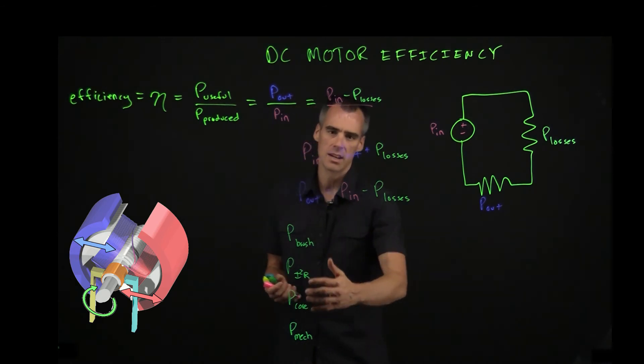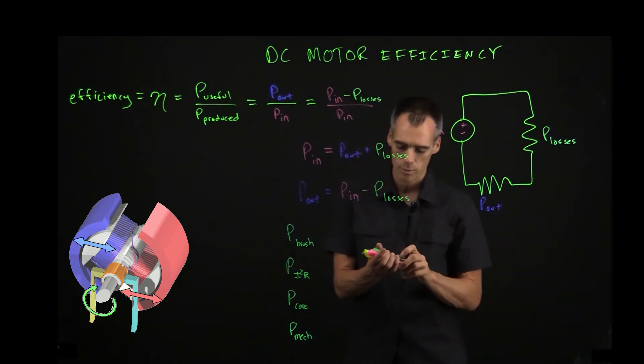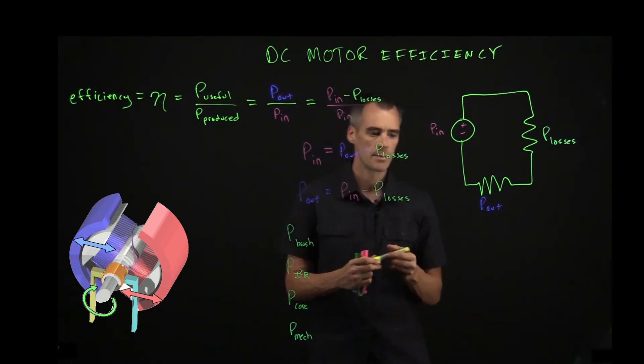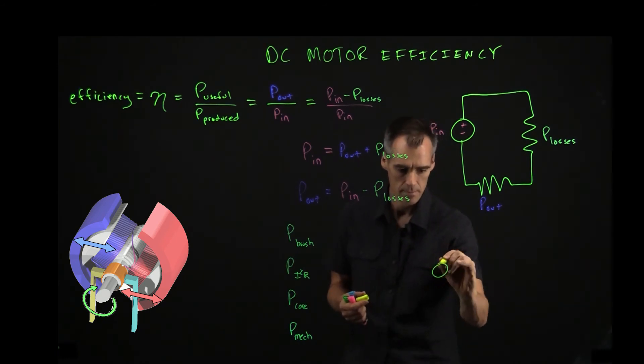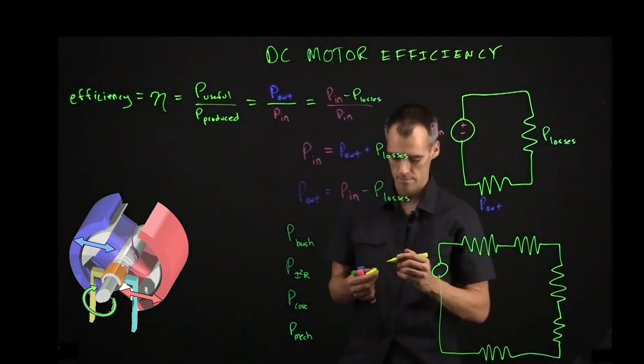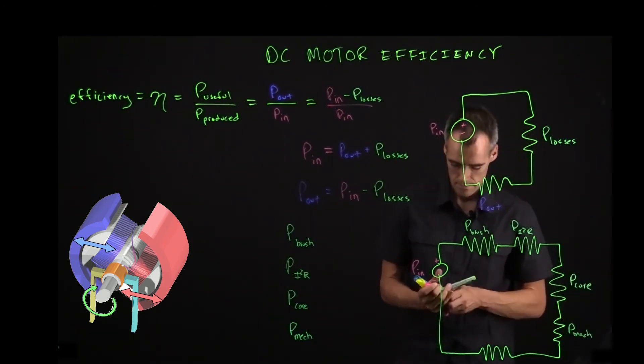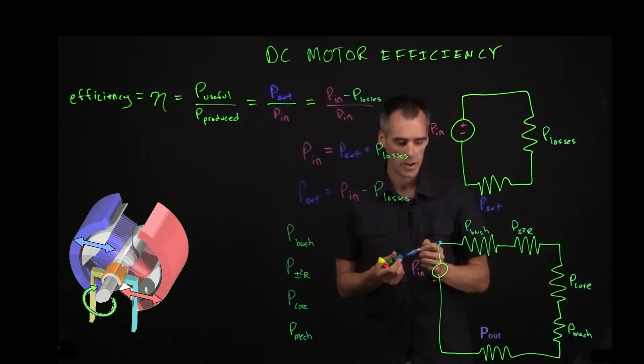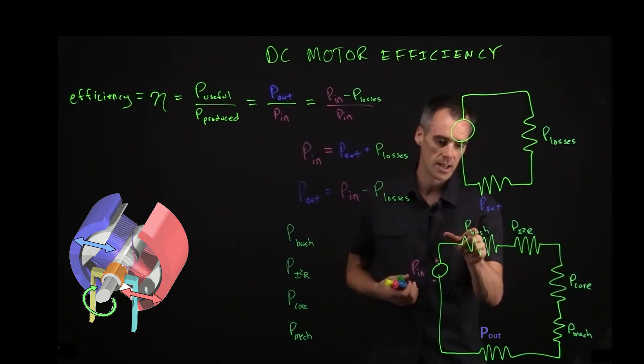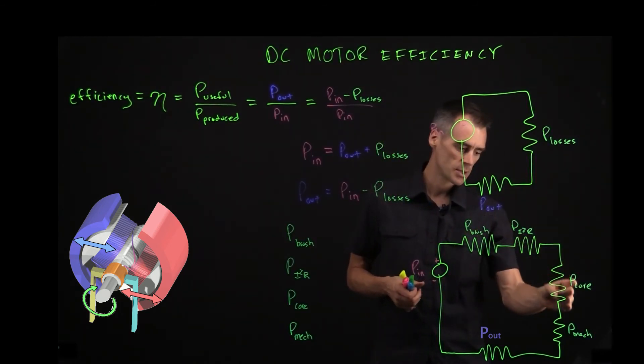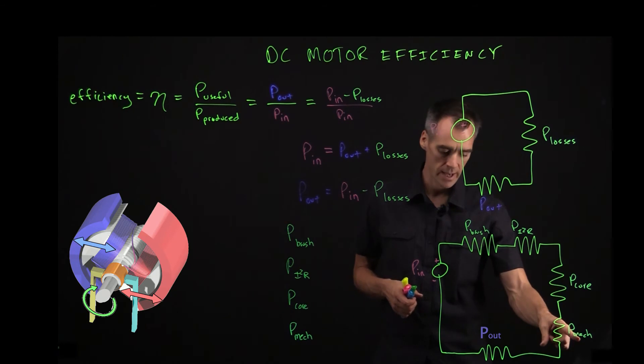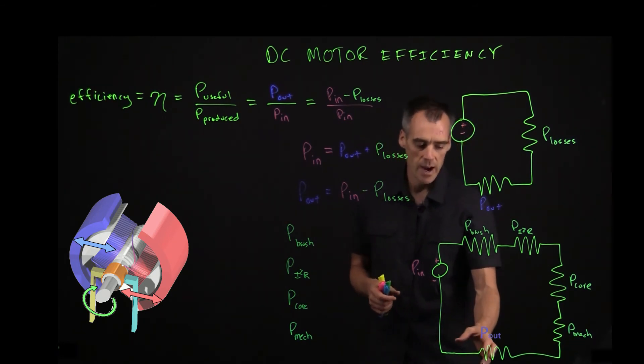So we've got four different types of loss. So maybe a little bit more detailed way to show this circuit might be something like this, where you've got four different types of loss here: the loss from the brush, loss from I squared R, loss from the core, and loss from the mechanical friction and your power out.